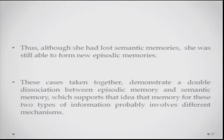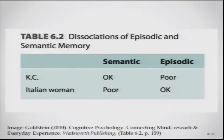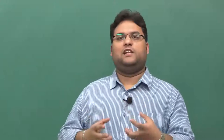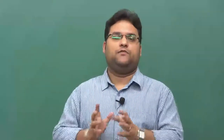Contrasting the cases of Casey and the Italian woman demonstrates what is called a double dissociation — a double dissociation between episodic memory and semantic memory. This tells us that episodic and semantic memory are two different concepts, administered by probably two different brain regions. In a double dissociation, patient one is bad at scale A but good at scale B, and patient two is good at scale A but bad at scale B — here Casey is good at semantic memory but poor at episodic, while the Italian woman is poor at semantic memory but good at episodic memory.